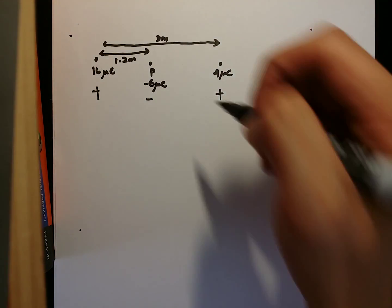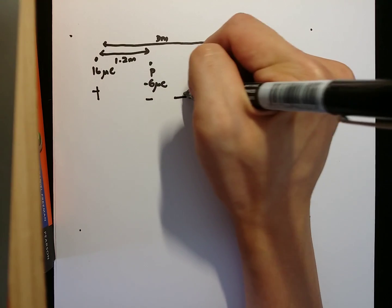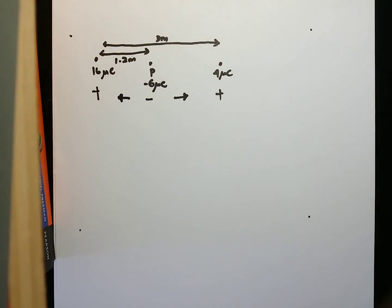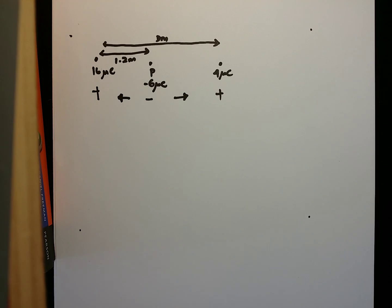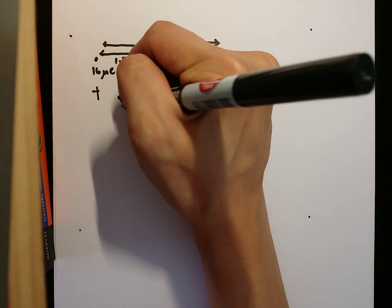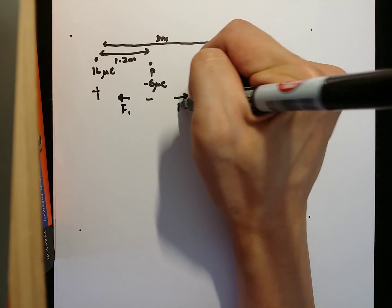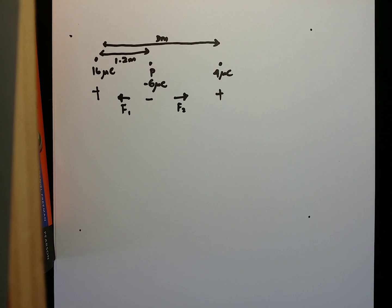Thus, we can conclude that the force of attraction will be in this direction and this direction. In order to find the resultant force, you have to first find what's F1, F2, due to attraction.